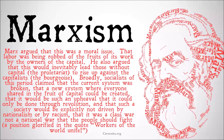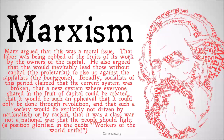He also argued that this would inevitably lead those without the capital — the proletariat — to rise up against the capitalists, the bourgeoisie. Broadly, socialists of this period claimed the current system was broken, that a new system where everyone shared in the fruit of capital could be created, that it would require revolution, and that such a society would explicitly not be driven by nationalism or racism but by a kind of universal humanism — a class war rather than a war between nations. Workers of the world unite.